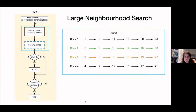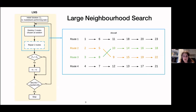The large neighborhood search is straightforward: we destroy two randomly chosen routes and repair them using CP with the objective of maximizing sum of slack.